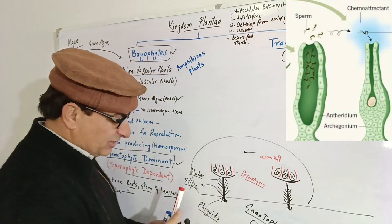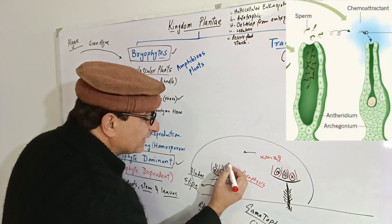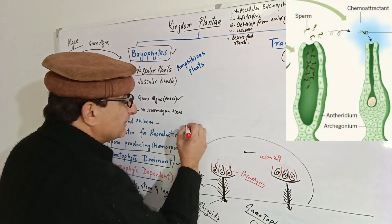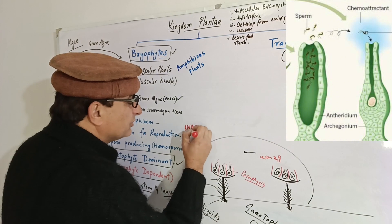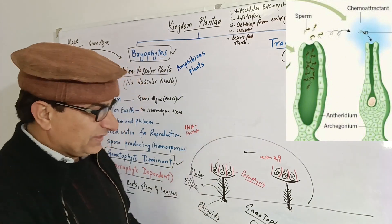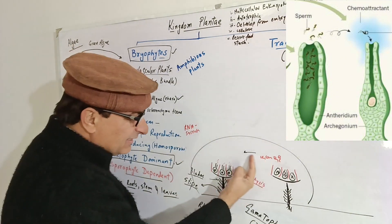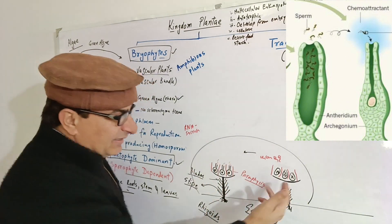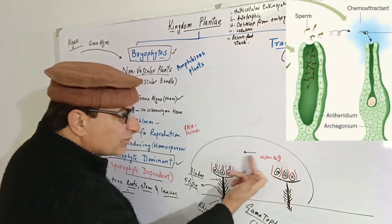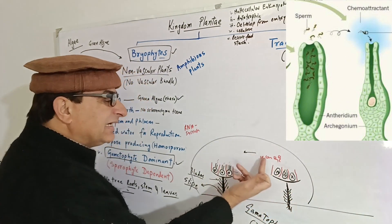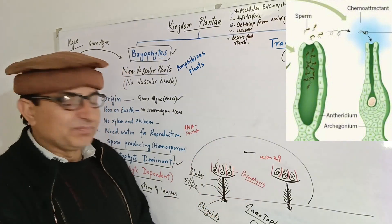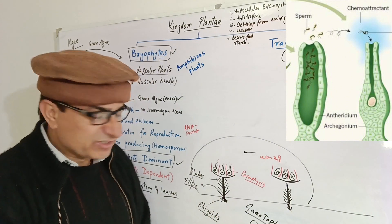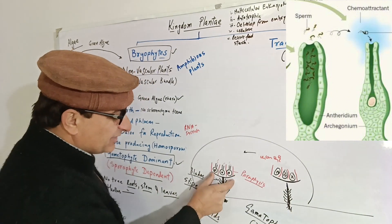Why do the sperms swim towards archegonia? Because archegonia release certain chemicals — possibly RNA or sucrose — and the sperms are chemotactically attracted towards these archegonia. They swim through the water and reach the archegonia, where they fertilize the eggs present inside.